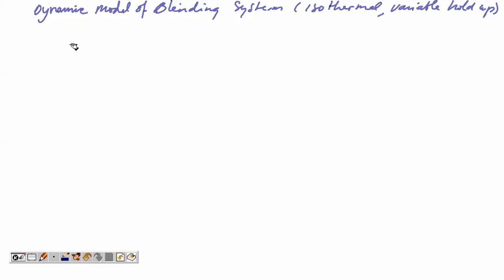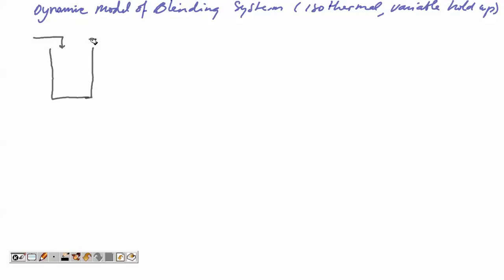Bismillahirrahmanirrahim. Let me study the dynamic model of a blending system with isothermal and variable holdup. Variable holdup means the volume is not constant for the process. We can draw a blending system between stream 1 and stream 2 with composition x2.